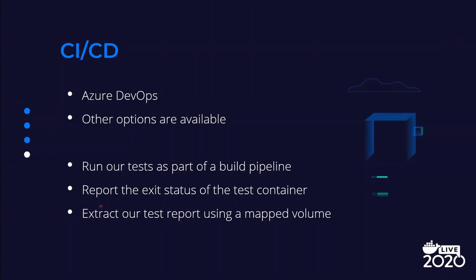Finally, I just want to quickly show how we can easily run this as part of our automated build pipelines. I'm going to be using Azure DevOps for this, but the concepts apply across all available options. We're going to run our tests as part of the build pipeline, report the exit status of the test container so that our build can fail if our tests fail, and also extract the test report using a mapped volume.